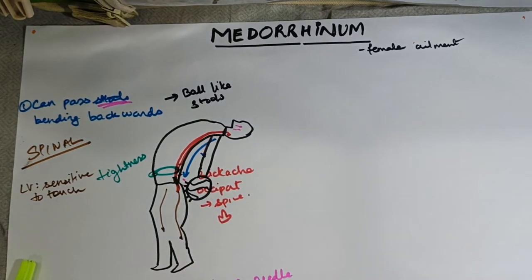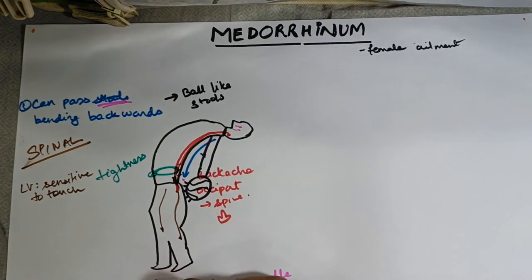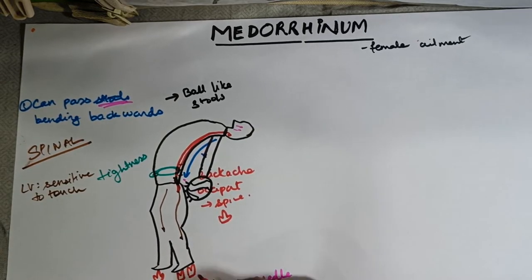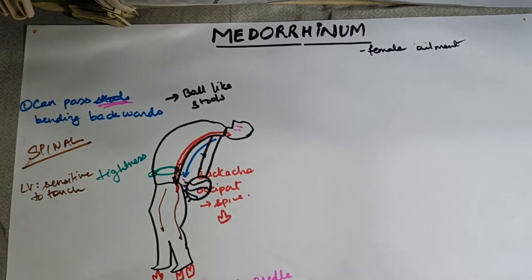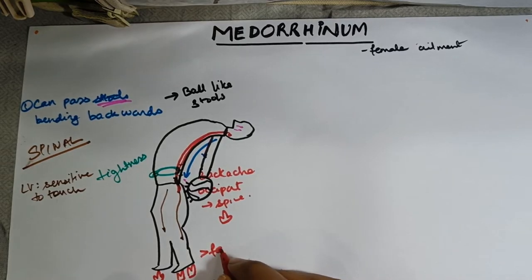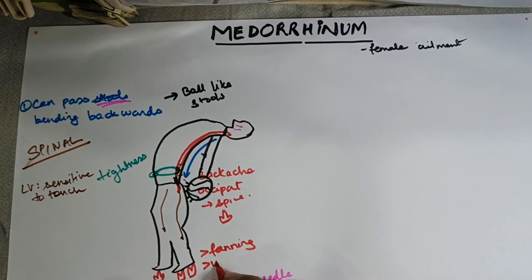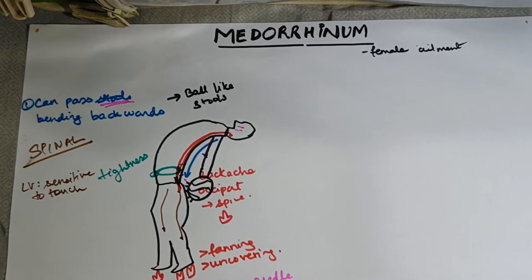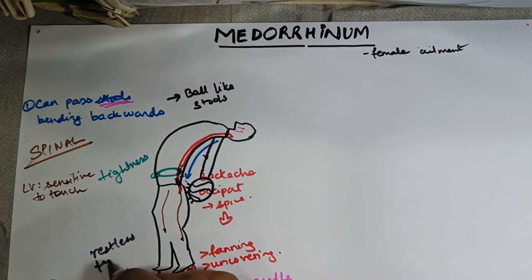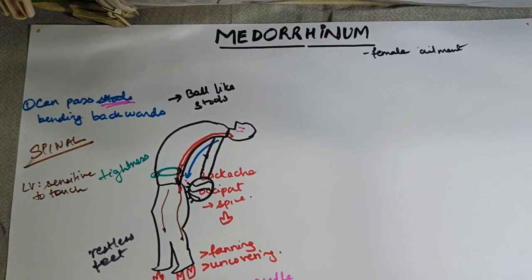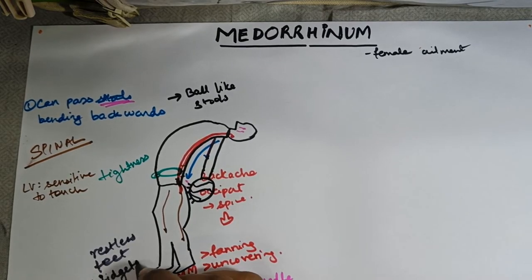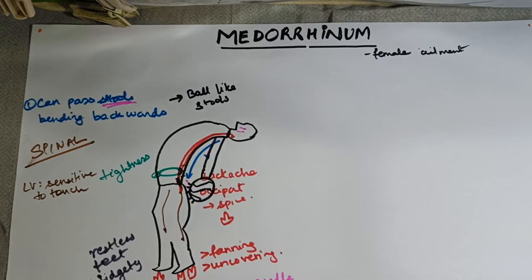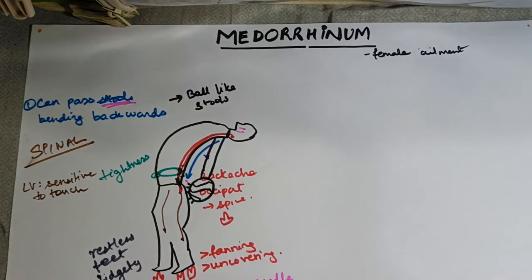Because there are so many spine symptoms, there is also going to be neuropathy. There is burning in the feet, which is better by fanning and better by uncovering. Along with that, there is restless feet syndrome — restlessness in feet plus fidgety, constant fidgety. There is also trembling all over with intense nervous and profound exhaustion.